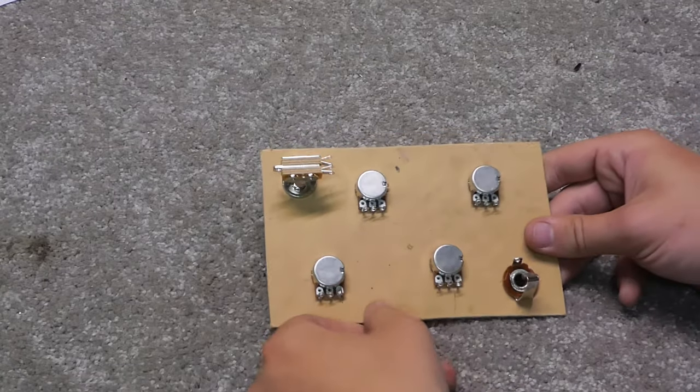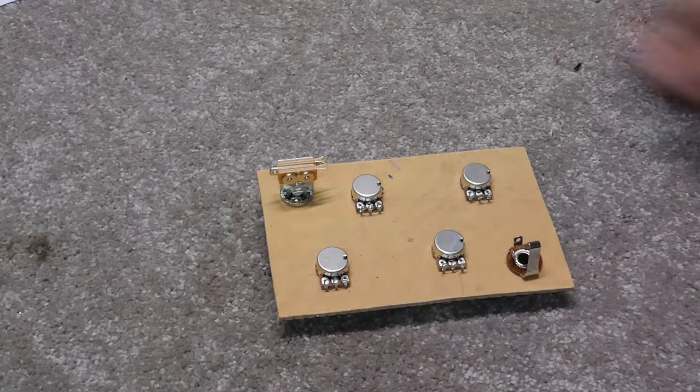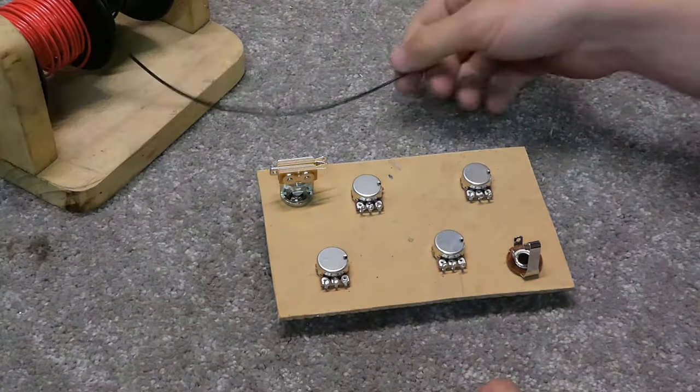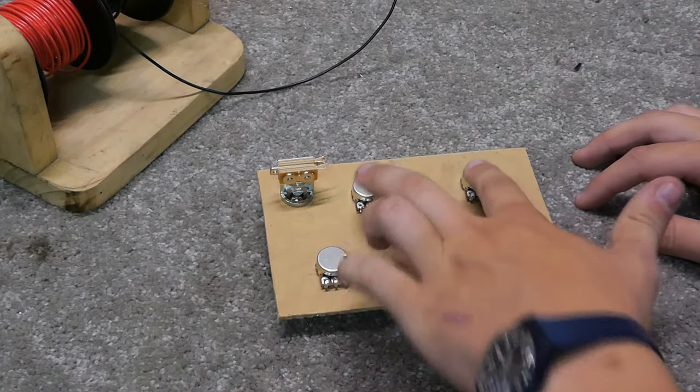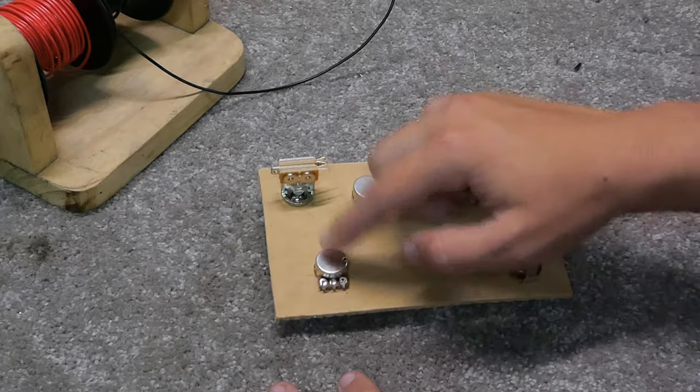So we're going to flip her over onto the back. These are our volume, these are our tone, and what you're going to start to do is, if you have a wiring diagram, you can use that, or you can just follow along as I say so. To start off with, we're going to want to ground each individual pot. So you run one wire from each pot all the way to the others.